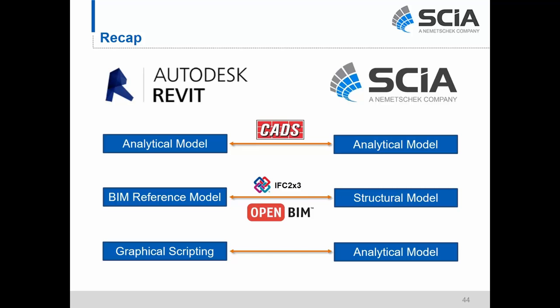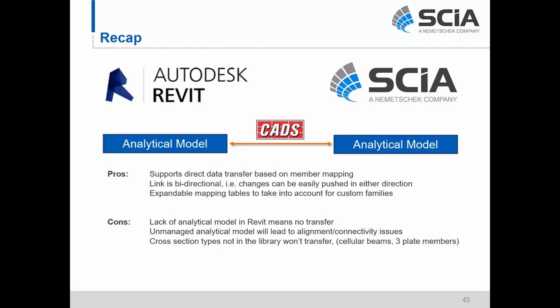Let's take a moment to recap what we've looked at. The first was the analytical model workflow. Benefits include the ability to support direct data transfer based on member mapping, a bidirectional link, and the ability to expand mapping tables to account for custom families — giving you one-to-one transfer with members and elements. However, if you have no analytical model in Revit, you won't get a transfer. If you don't manage the analytical model, you could run into alignment and connectivity issues. Also, custom cross-section types like cellular beams or three-plate members without specific Revit families won't be transferred through that link.